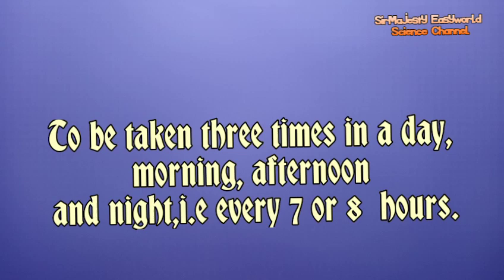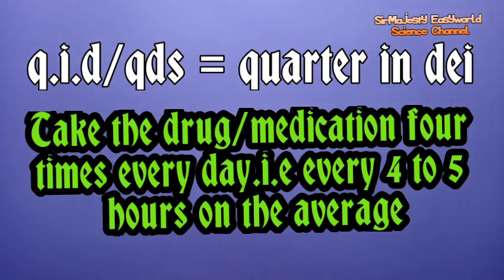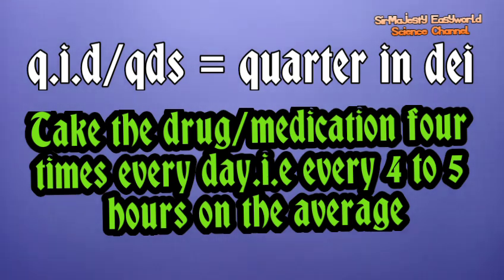What about QID? QID stands for quater in die — quarter in day — that's four times in a day. You're going to take the drug four times, dividing by hours. It's better to start from 6 in the morning because you're heading towards 10 p.m., when you'll likely be asleep. Or your doctor may want you to take it at midnight. QID means four times in a day.